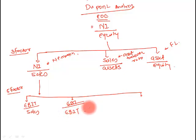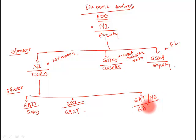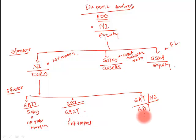The second part is EBT divided by EBIT. If the interest amount is lower, this number will be higher — so this ratio captures the interest impact. The third part is net income divided by EBT (Earnings Before Taxes), which captures the tax impact. So: EBIT by sales gives operating profit margin, EBT by EBIT gives interest impact, and net income by EBT gives tax impact.